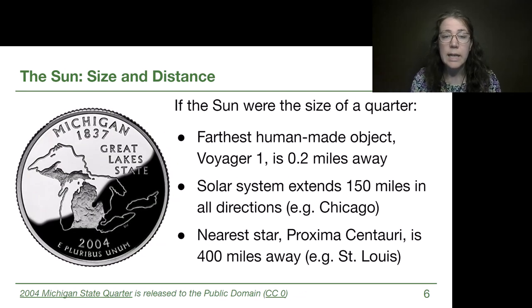In terms of distances, if the Sun were the size of a quarter and I held it up here in Grand Rapids, let's say that we're standing on the GRCC campus, the farthest human-made object would be Voyager 1. It was launched in the 1970s and it would be just a couple of city blocks away from campus. Then if we were to imagine me still holding up a quarter, the solar system that we think of, all of the stuff that we learned about in Module 3 and Module 2, extends about 150 miles in all directions from our scale model.